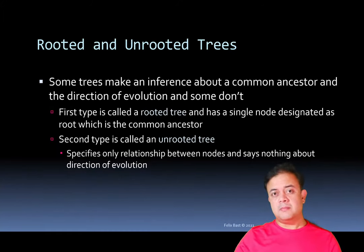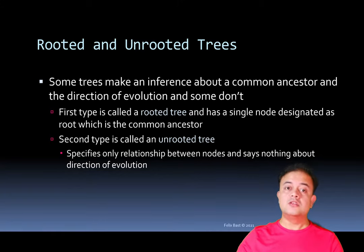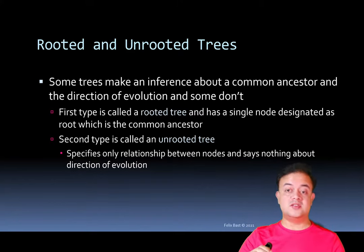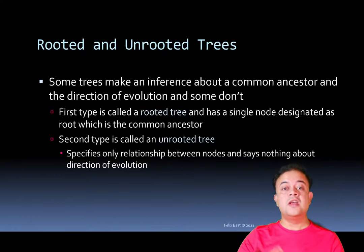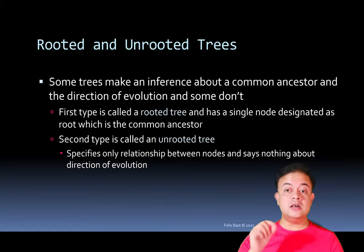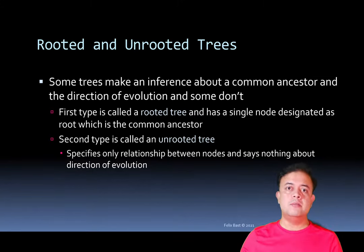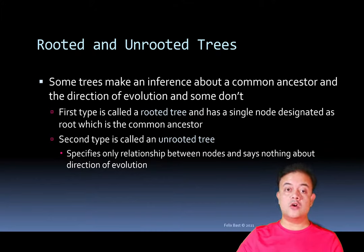There are two main kinds of trees: rooted and unrooted. Some trees make an explicit assumption or inference about the common ancestor — that is called a rooted tree. Other trees make no such assumption and have no directionality — that is called an unrooted tree. A rooted tree has a single node designated as the root, which is the common ancestor of the entire tree, usually called the most recent common ancestor or MRCA. If the MRCA is explicitly located, the tree is rooted.